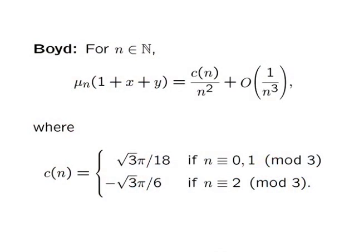Boyd himself provided a first-order asymptotic for mu sub n of p for the particular polynomial 1 plus x plus y. In that case, Boyd showed that mu sub n could be expressed as some coefficient over n squared plus big O of 1 over n cubed. The coefficient of 1 over n squared here depends on n, but only mod 3, it's periodic.